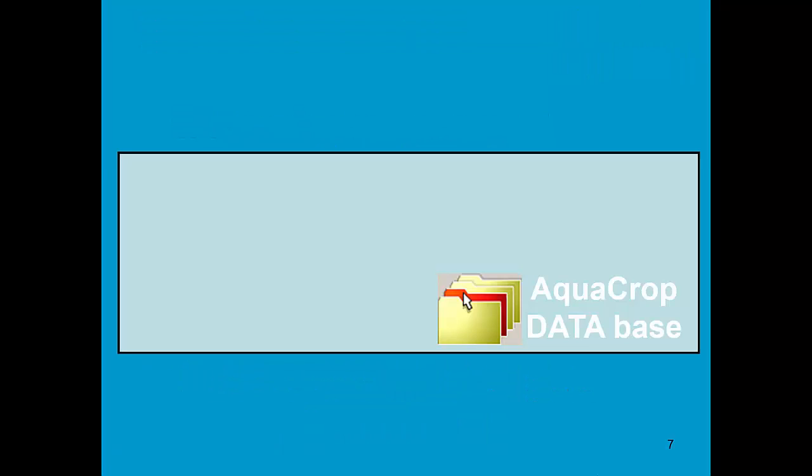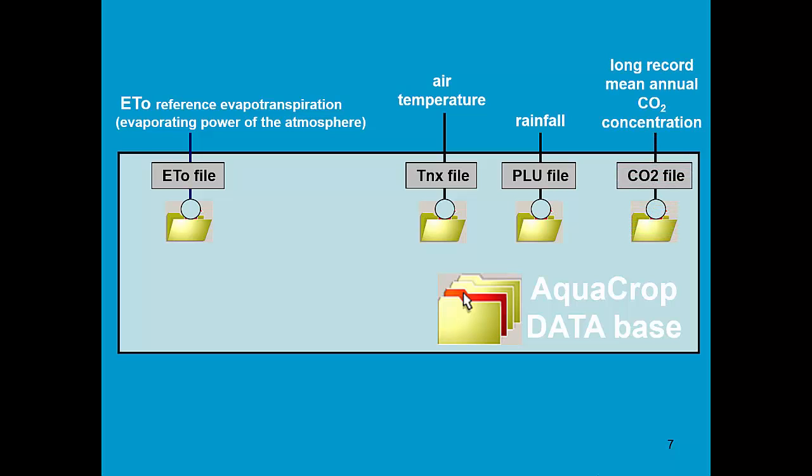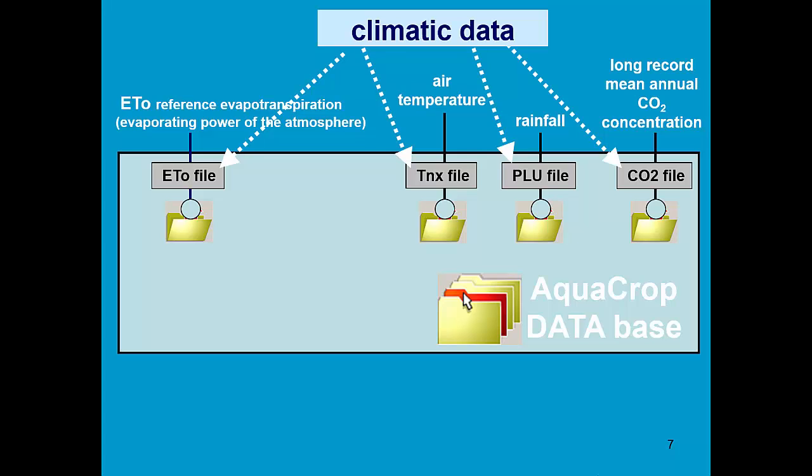AquaCrop contains a database in which climatic data is stored. On the one hand, we have the evaporating power of the atmosphere, which is stored in an ET node file. We also have temperature files, T and X files, which contain the minimum and maximum air temperature. Next, we have rainfall files, PLU files, which contain the rainfall data. And finally, there are CO2 files, which contain the long record of mean annual CO2 concentration. These four files contain the climatic data.